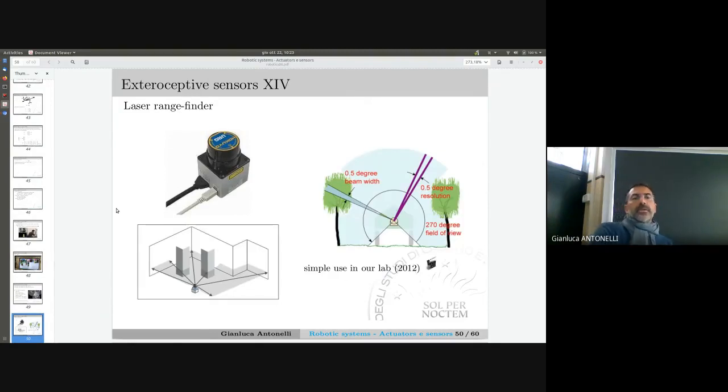A very cheap sensor - not sorry, not cheap, it's very diffuse but not very cheap - it can have a certain cost - is a laser range finder. Basically, there is a rotating head that shoots laser and reads the time of flight. It makes this something like 700 times every 100 milliseconds for 270 degrees, so not for all 360 degrees. Here is a simple use in our lab.